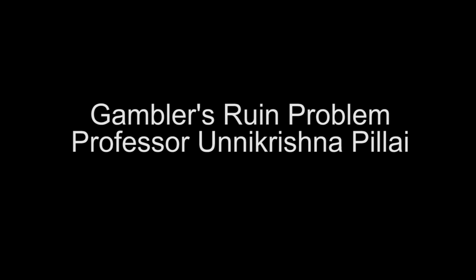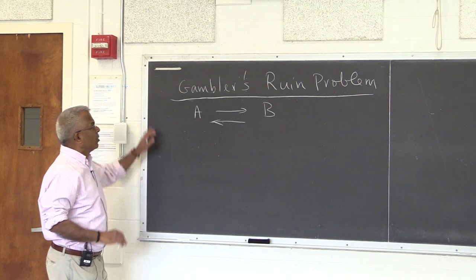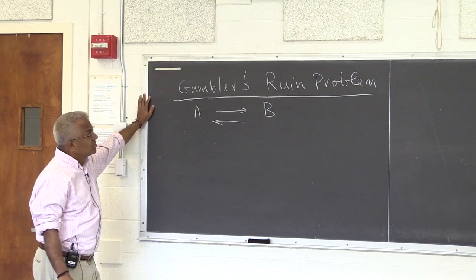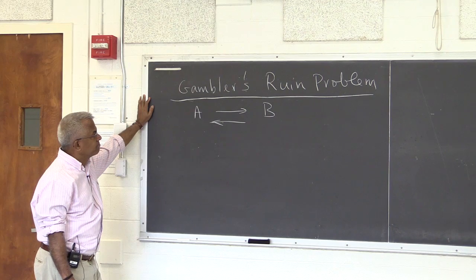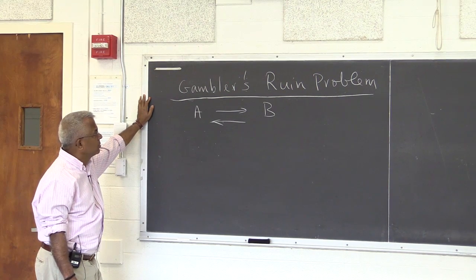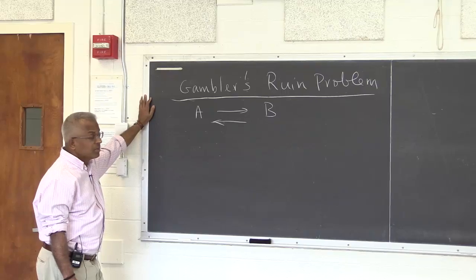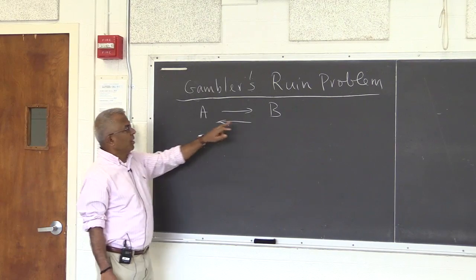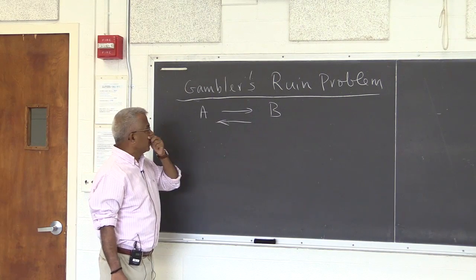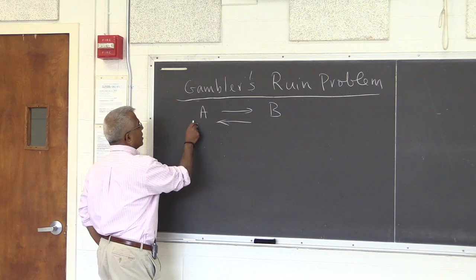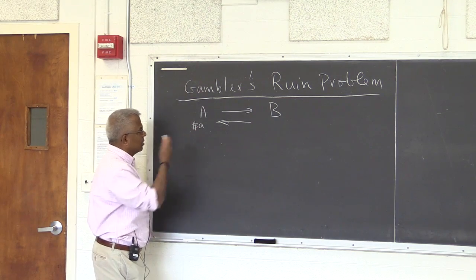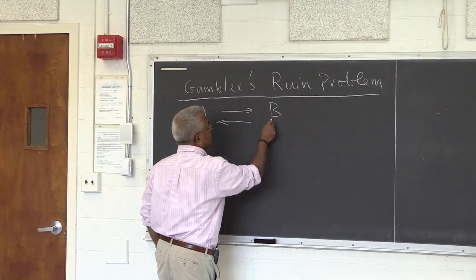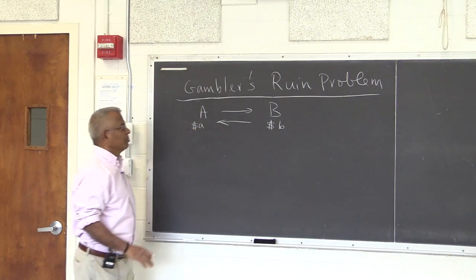Let's go over the Gambler's Ruin problem. This is a classic problem with lots of applications in various types of scenarios. In the very basic problem, there are two players, A and B. They play against each other. A starts with wealth of dollar-a, and similarly B has dollar-b with him.